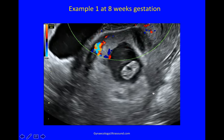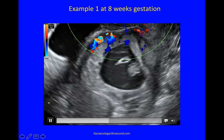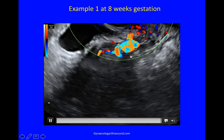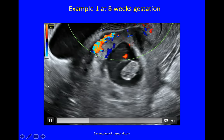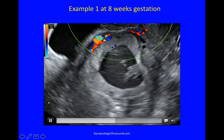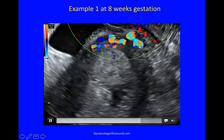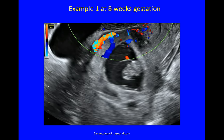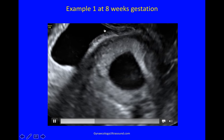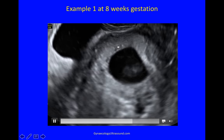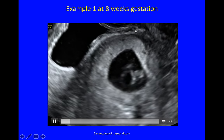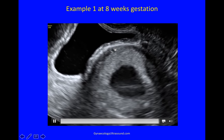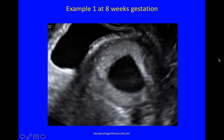Here you can see the vascularity with colour Doppler applied. These are the abnormal vessels from the trophoblast — because the niche is relatively hypoxic, these vessels invade looking for a better blood supply than they can get from the scar tissue — and you can see very strong vascularity, confirming this is embedded within the niche and not part of a miscarriage. When assessing whether vessels are crossing over into the bladder serosa or mucosa, you can see here a normal sliding sign where the bladder is moving normally on the anterior uterus, and the vessels do not cross into the bladder.